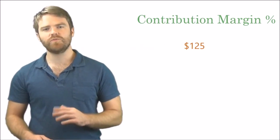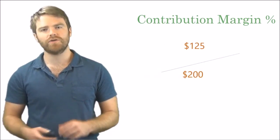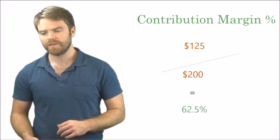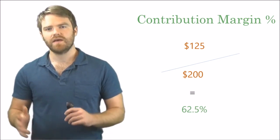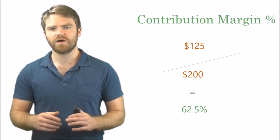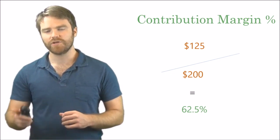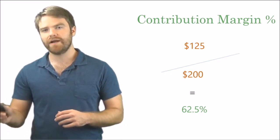So the contribution margin percentage would be your $125 contribution margin divided by $200. Now we're going to use this number here. And what do we get? Well, 62.5%. So what we're saying is this: of sales, 62.5% will be contribution margin. That's how much it takes up. Now we're going to use this number, so pause the video if you need to write it down. We're going to carry it forward here.